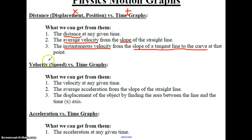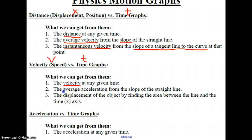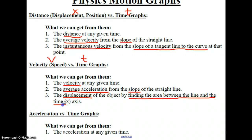Our next type of graph is the velocity or speed graph, using the symbol V versus time T — a VT graph. The easiest thing we get is velocity at any given time. Similarly, we get average acceleration from the slope of the straight line. One thing that is commonly tested is finding the displacement of the object by finding the area between the line and the time axis — they really like to test that one.